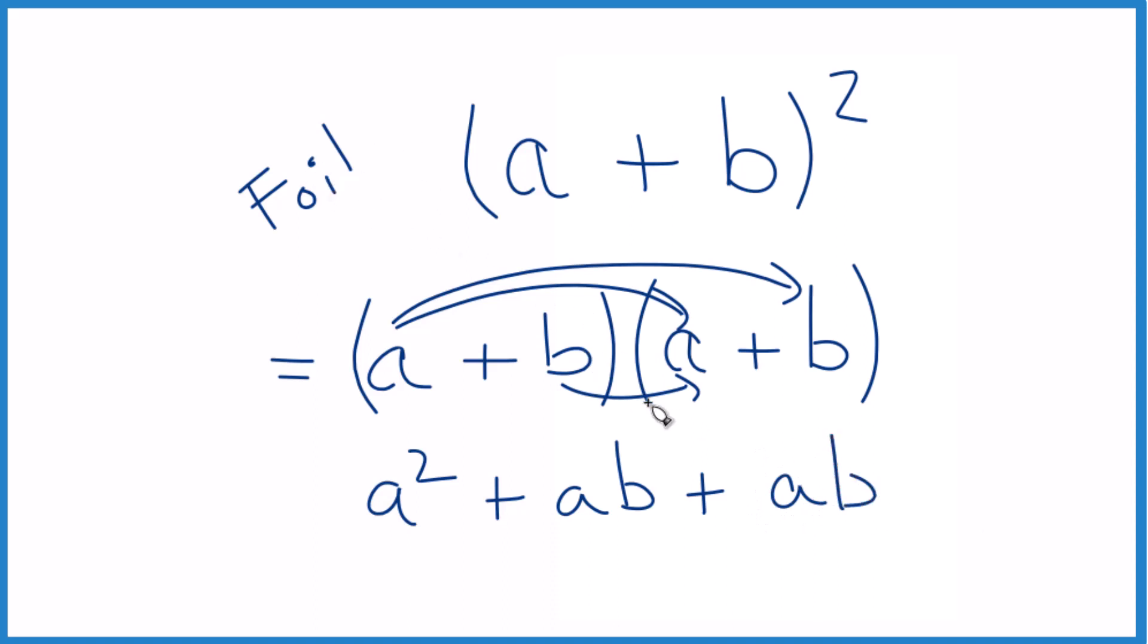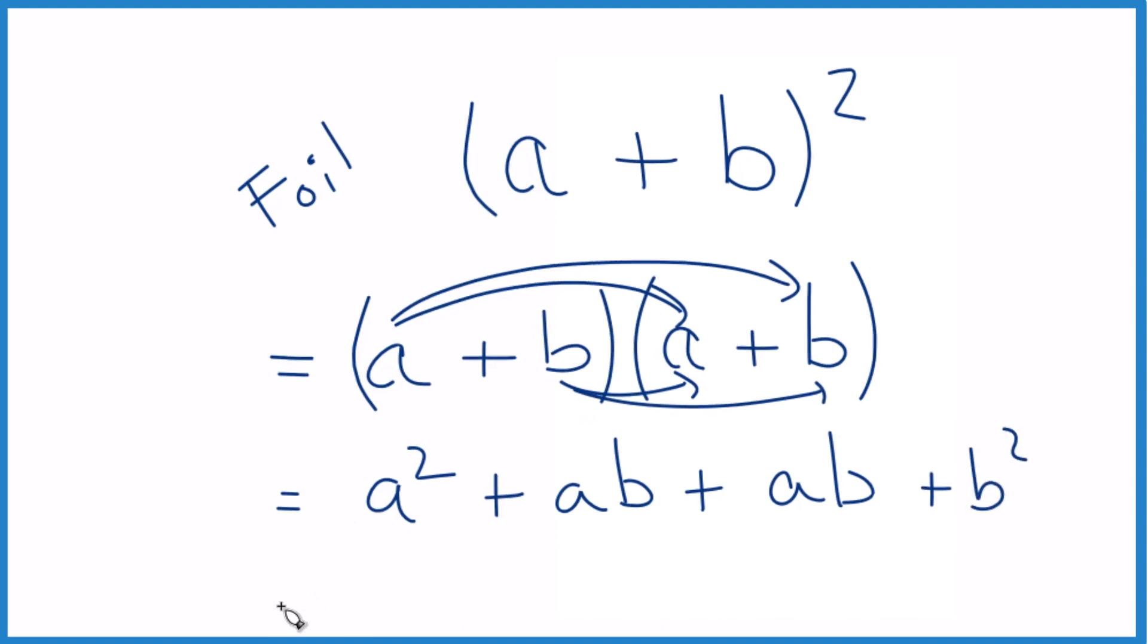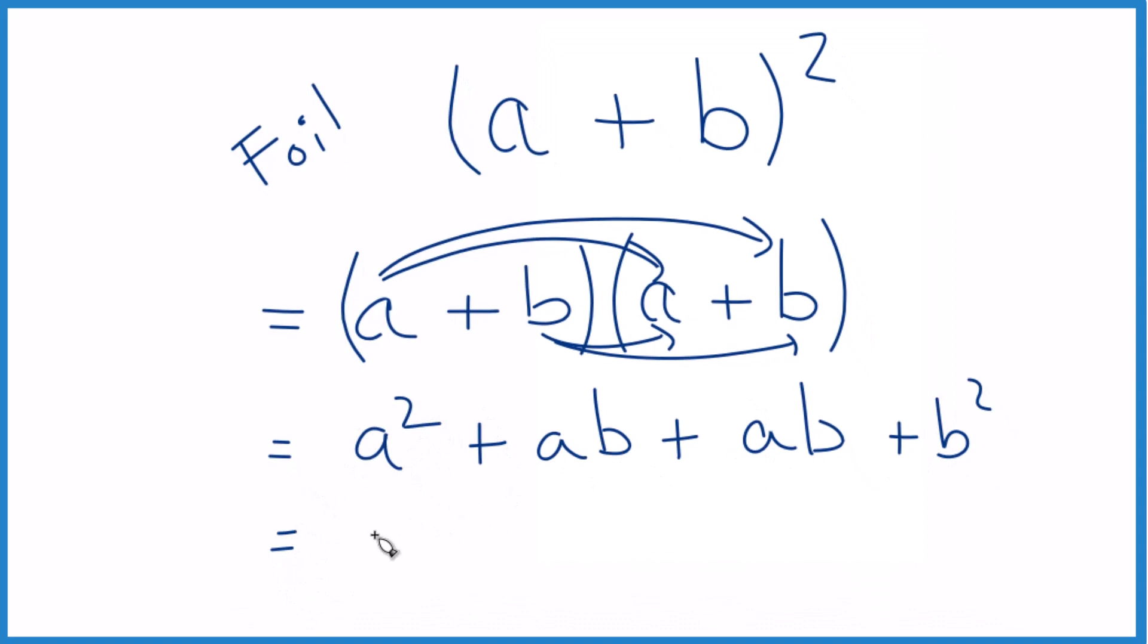And then the last term, b times b, so we get our b squared here. So we can take this now, combine the like terms. So we have a squared, but then we have ab plus ab. So we have two of these ab's here, plus b squared.